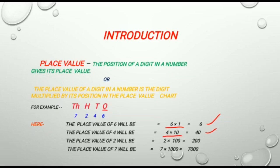Because in this number 4 is at 10's place. The place value of 2 will be 2 multiplied by 100 is equal to 200. Because in this number 2 is at 100's place.